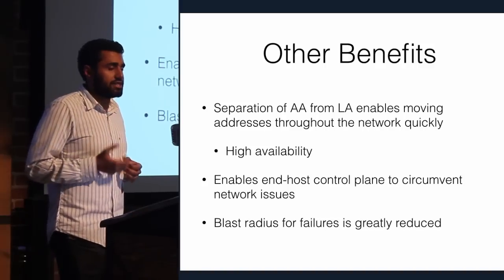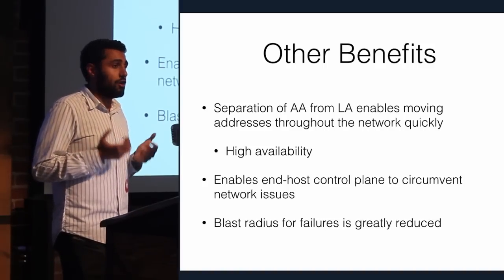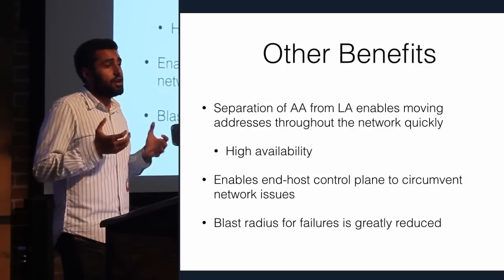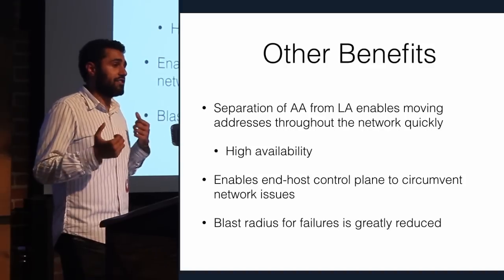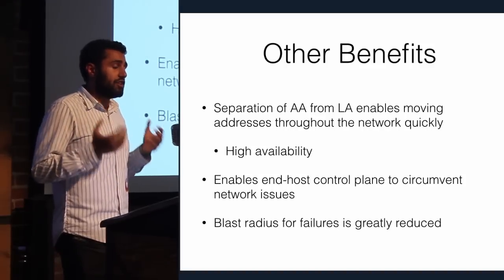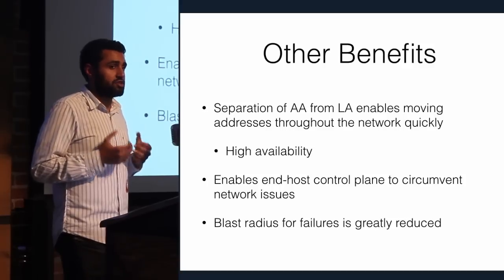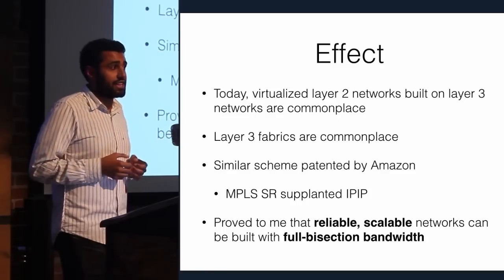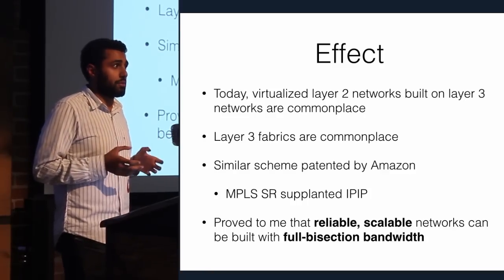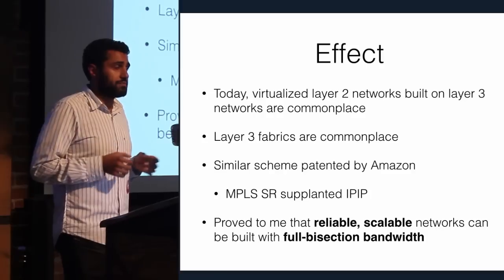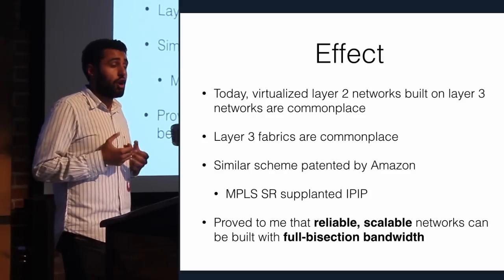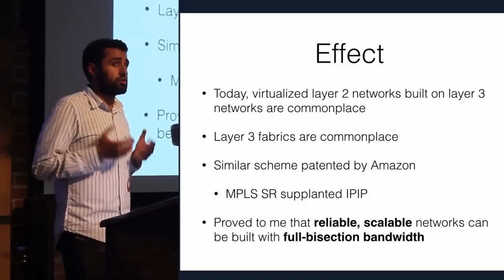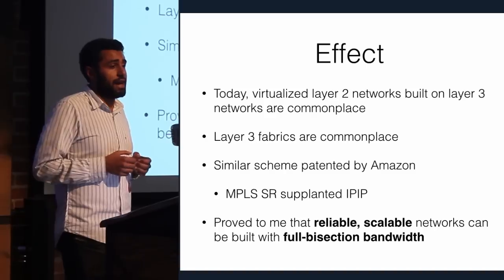By separating AAs and LAs, you get host high availability — hosts can move throughout the network very quickly. You also enable end hosts to control the data plane without necessarily working directly with the data plane. When there are failures in the network, they typically affect less than 25% of the traffic. Today in 2015, virtualized layer 2 networks on top of layer 3 fabrics are very common — Amazon recently published a patent using this technology with MPLS instead of IP-in-IP — demonstrating you can build reliable, scalable networks with full bisection bandwidth out of commodity devices.